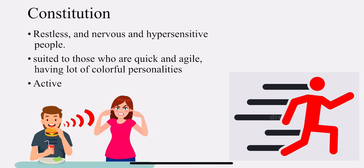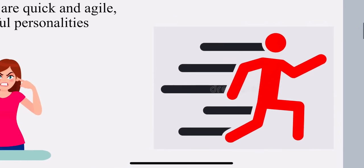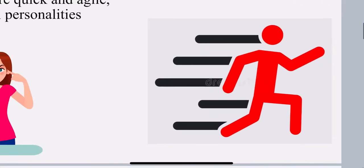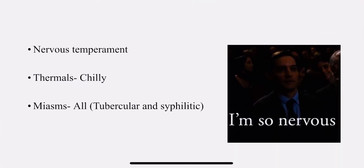The spider groups have a lot of colorful personalities; they are very active. The temperament is nervous. Thermally, the spiders are chilly. The miasms — all three miasms will be present: psora, sycosis, and syphilis. More prominently, tubercular and syphilitic. The spider group person is very nervous.